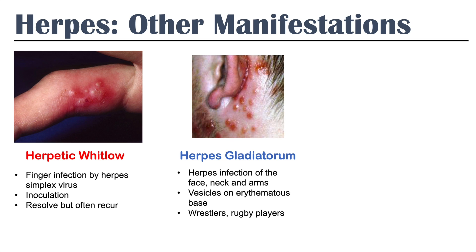Herpes gladiatorum occurs in wrestlers and rugby players — you can think of gladiators, people that have physical contact with each other. One person might have an eruption of herpes and, in physical contact with someone else, can pass it on to another individual. Close contact with someone with herpes against an area of the face, neck, or arm can lead to herpes gladiatorum. It is all due to skin-to-skin contact in physical sports like wrestling and rugby.